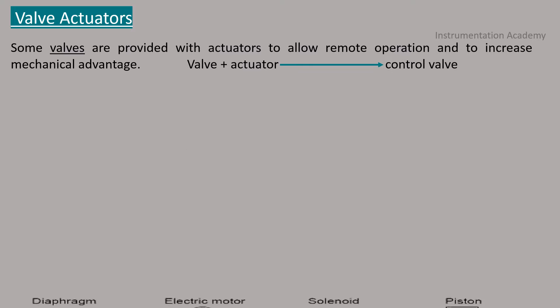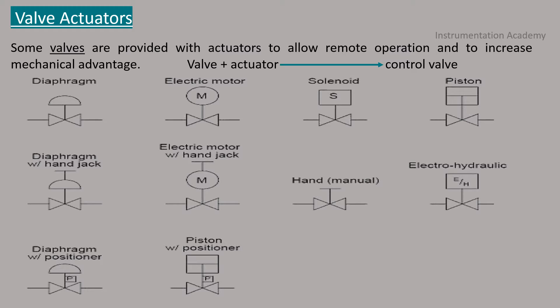Valve actuators. Some valves are provided with actuators to allow remote operation and to increase mechanical advantage. The combination of a valve and an actuator is commonly called a control valve. Control valves are symbolized by combining the appropriate valve symbols and actuator symbols. This figure shows the P&ID symbols for the common valve actuators. Although each is shown attached to a gate valve, an actuator can be attached to any type of valve body. If no actuator is shown on a valve symbol, it may be assumed that the valve is equipped with a hand wheel for manual operation.